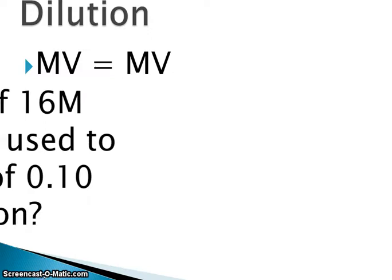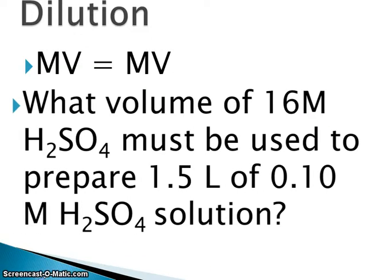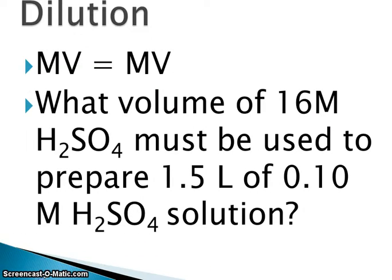When we look at our equation, our equation is going to be M1V1 equals M2V2. So when we solve this particular problem we'll have M1V1 equals M2V2. The 1's meaning the initial molarity and volume. The 2's meaning the final molarity and volume.